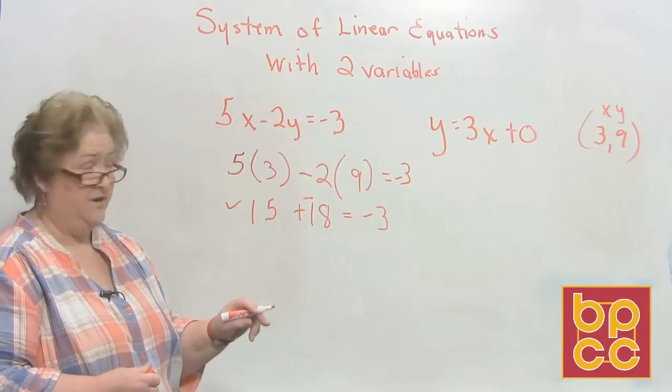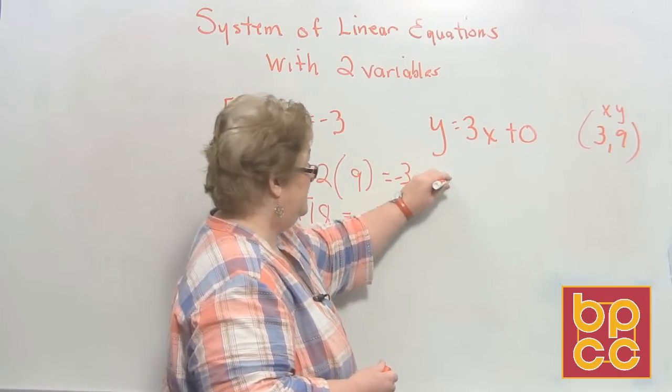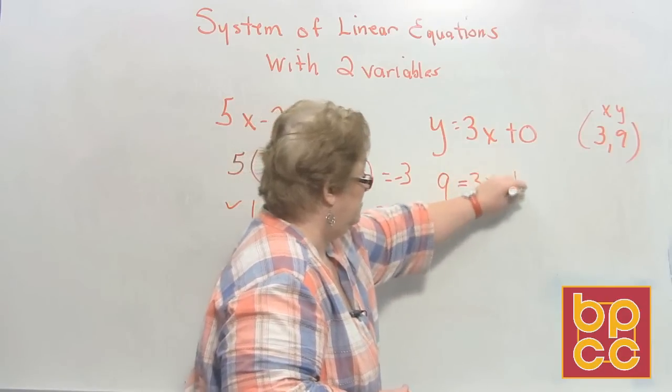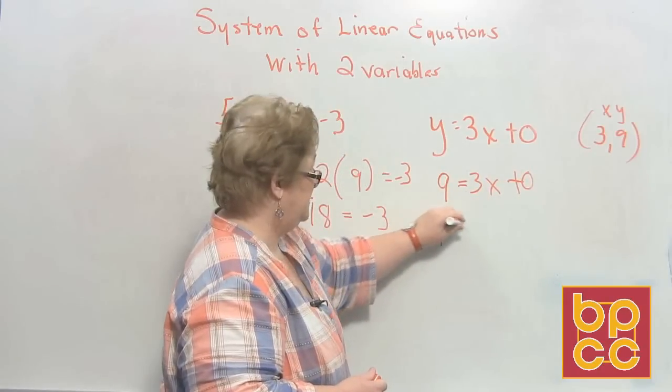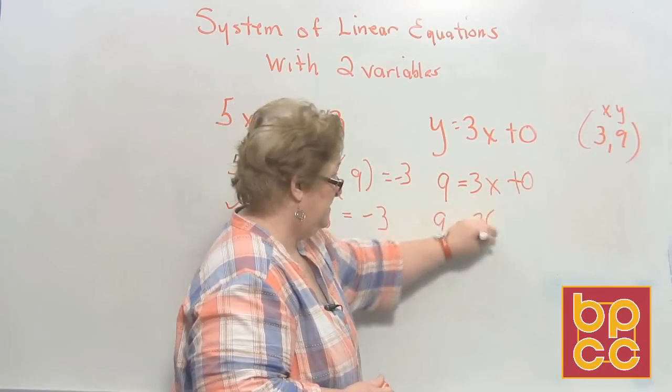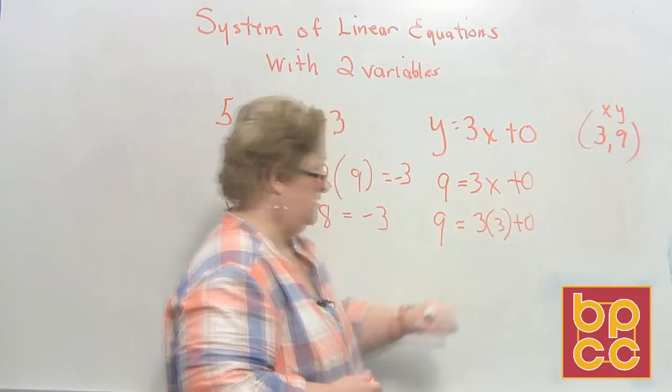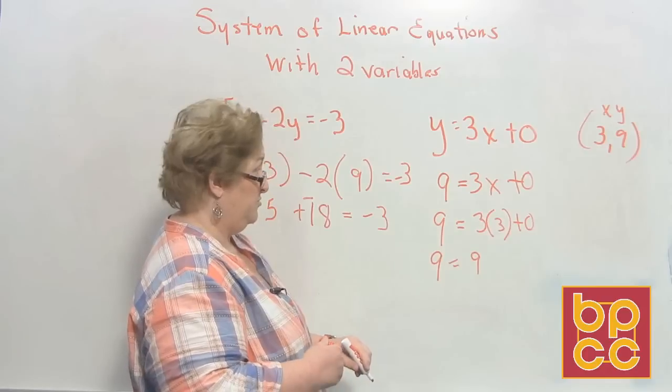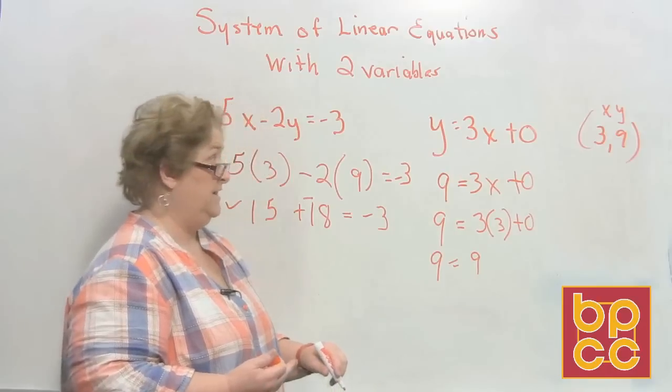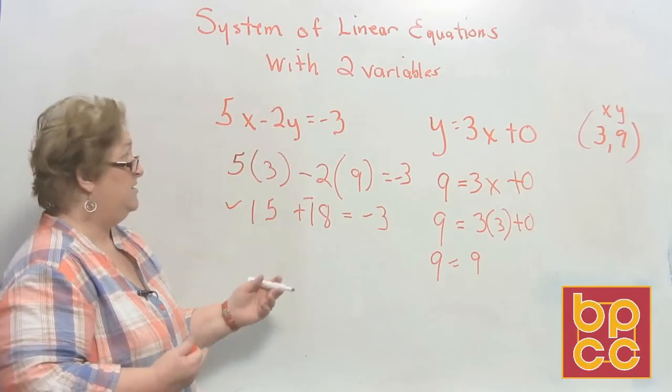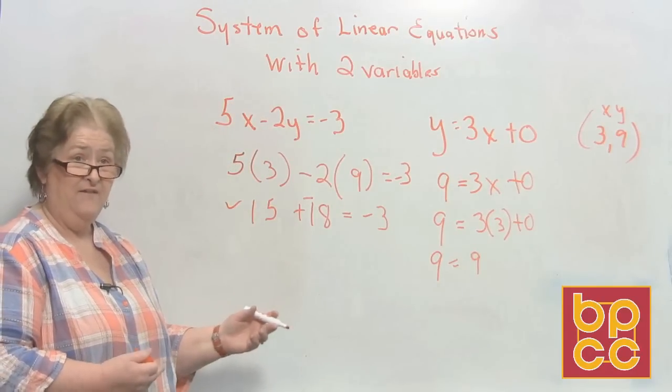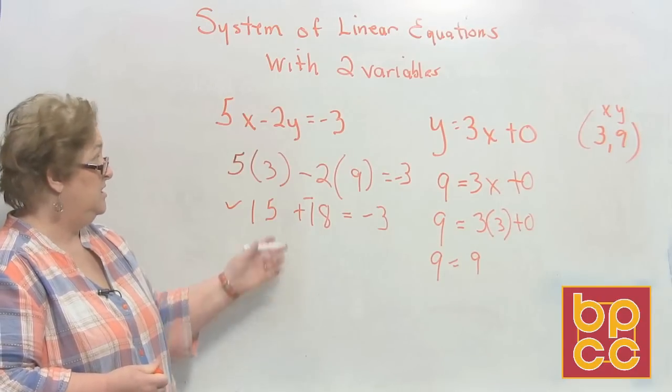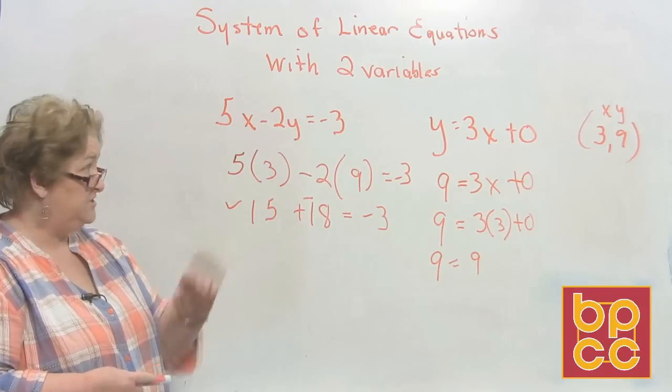Let's see if it works in the second equation. y is 9, so 9 equals 3x plus 10. That's 9 equals 3 times 3 plus 10, and 9 equals 9. So 3 comma 9 worked in both of these. When I look at these equations, I know that when I graph them, they're going to have something in common, and it's going to be 3 comma 9. This is a solution to these two linear equations.